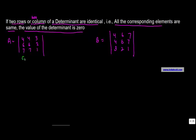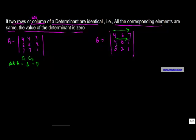In matrix A, if you look at column one and column two, the corresponding elements are the same: 4, 4 / 6, 6 / 7, 7. According to the property of determinants, if two columns have identical values — all corresponding elements are the same — then the determinant Delta is equal to zero. Similarly, if two rows of a determinant are the same, the value is also zero.